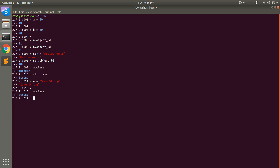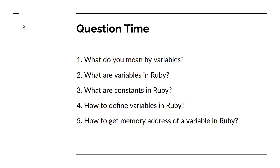Now it's question time. Let's go to the question slide covering what we discussed in this video. The questions are: What do you mean by variables? What are variables in Ruby? What are constants in Ruby? How to define variables in Ruby? And how to get the memory address of a variable in Ruby? Variables are simply memory locations where we can store some values. Variables in Ruby are objects of some classes.